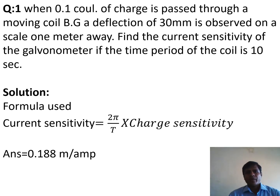Question number 1: When 0.1 coulomb of charge is passed through a moving coil in a ballistic galvanometer, a deflection of 30 millimeters is observed on a scale 1 meter away. Find the current sensitivity of the galvanometer if the time period of the coil is 10 seconds.